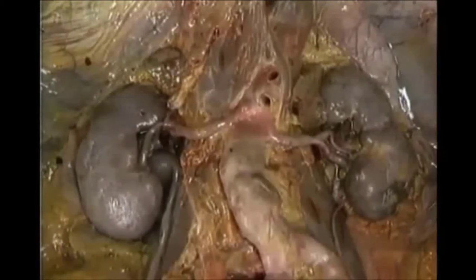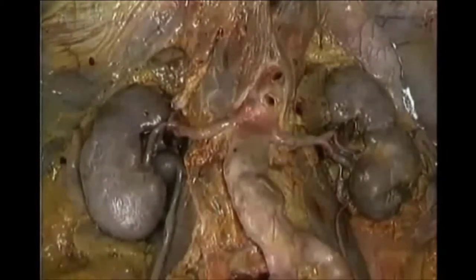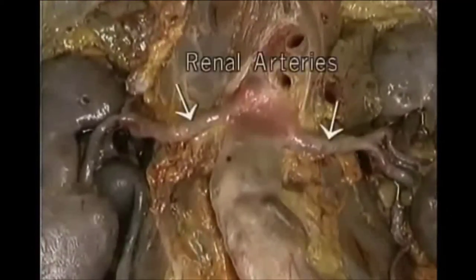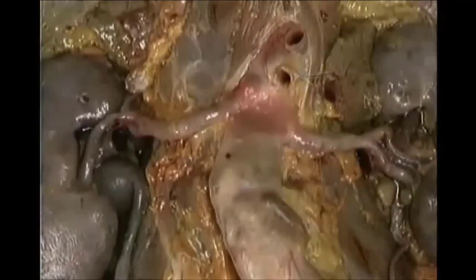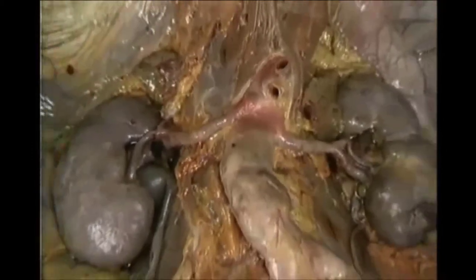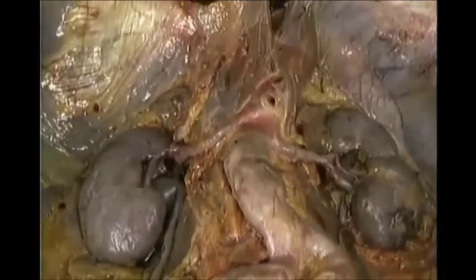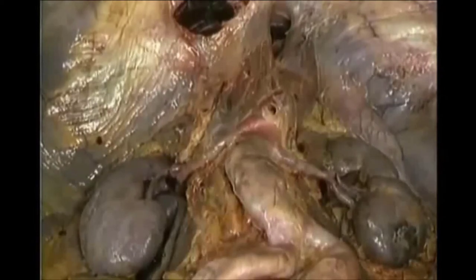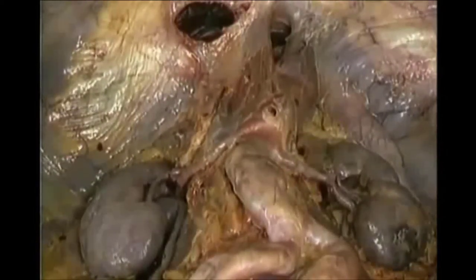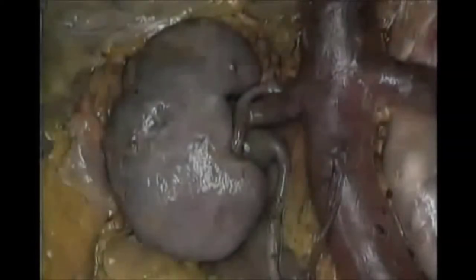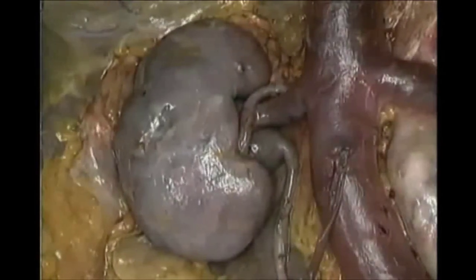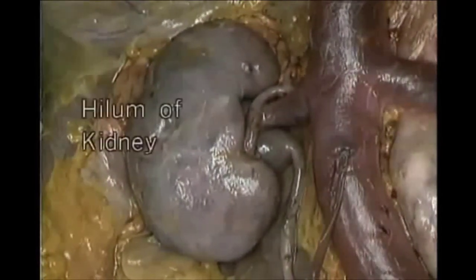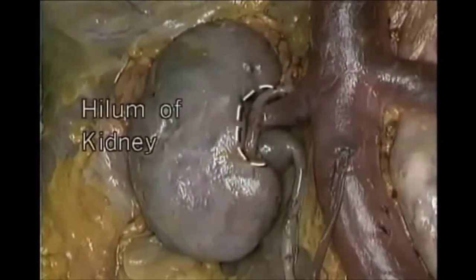To see the renal arteries, we'll take the veins out of the picture. In this specimen, the aorta and common iliac arteries are quite tortuous. The renal arteries arise just below the superior mesenteric artery and pass quite sharply backward to reach the kidneys, which lie on each side of the great midline prominence formed by the vertebral bodies. The branches of the renal artery and vein enter the kidney at the hilum.